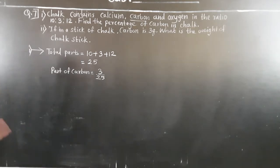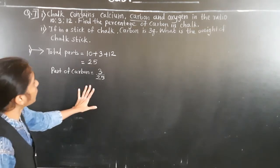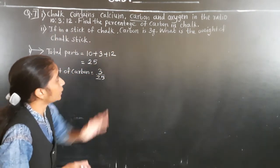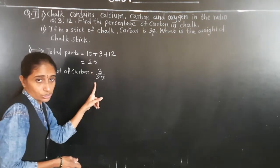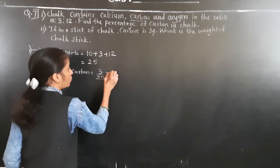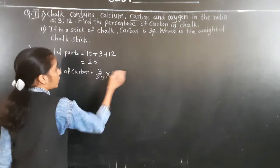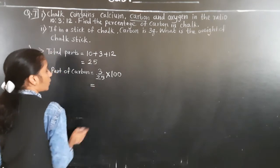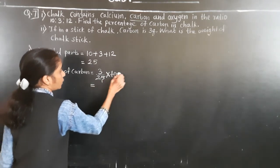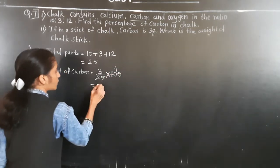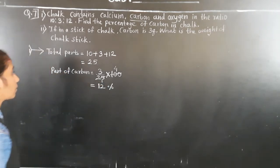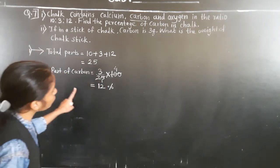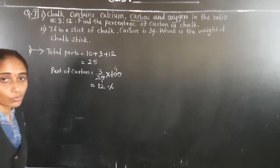Now let's find the percentage of carbon in a chalk. We have to convert the fraction into percent, so we multiply by 100. 25 fours are 100, and 3 fours are 12. So the percentage of carbon is 12 percent.